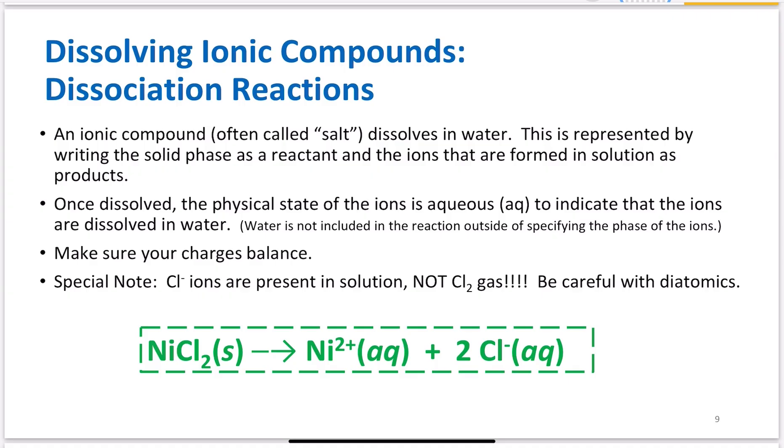Dissolving ionic compounds - dissociation reactions. An ionic compound is often called a salt. We will define salt later, but a salt is a cation-anion combination where the cation is not H+ and the anion is not OH-. They dissolve in water. This is represented by writing the solid phase as the reactant and the ions that are formed in solution as the product. So nickel(II) chloride solid breaks into nickel(II) ions and two moles of chloride ions. Once dissolved, the physical state of the ions is aqueous, meaning dissolved in water.